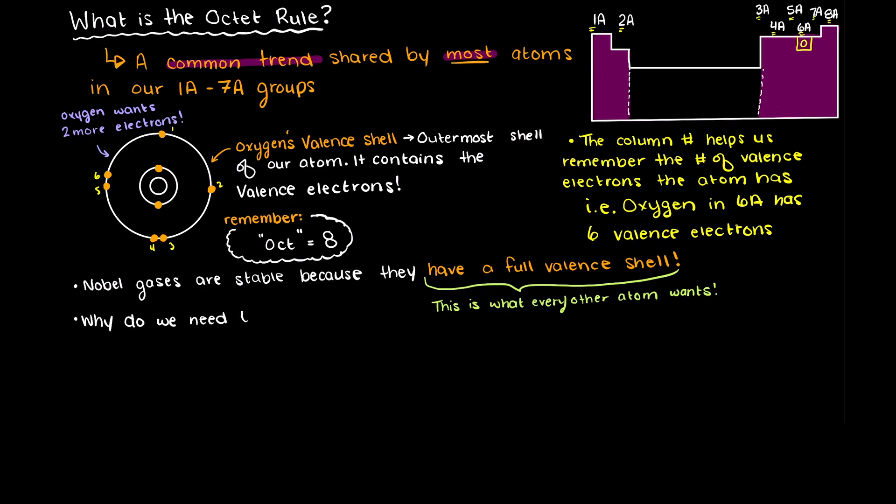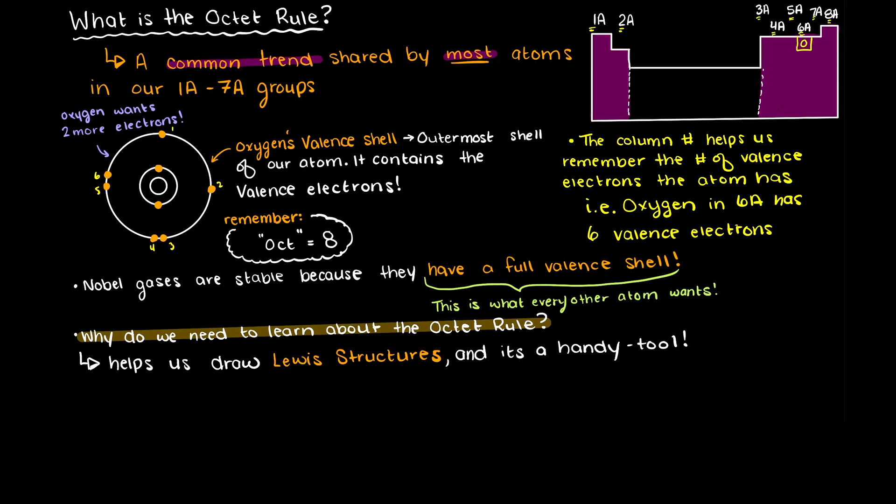But why do we need to learn about the octet rule? Well, the octet rule is an important trend for drawing Lewis structures, which will be the topic of our next video. Essentially, the octet rule helps us understand in what ways our atoms will react with one another when making a compound. This helps us predict what our products will be when the two atoms react together.